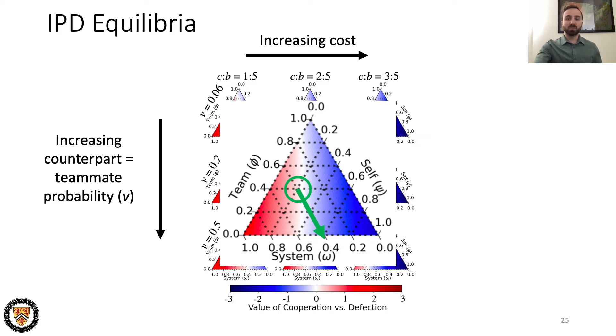Blue represents a scenario where if agents had that specific credo defined along the three axes, they're better off choosing defection. Alternatively, red corresponds with scenarios where cooperation is favored in expectation.